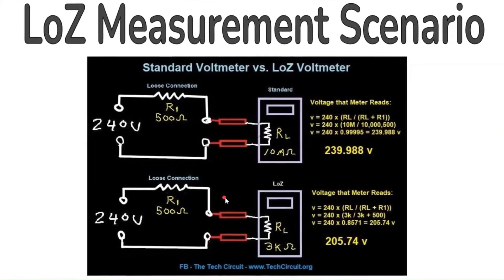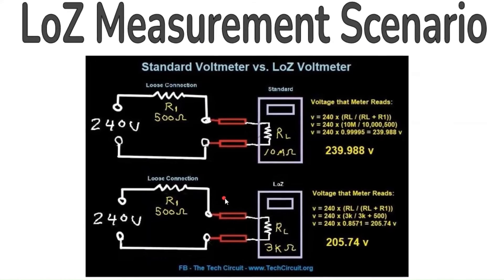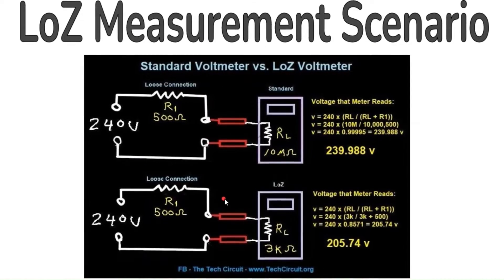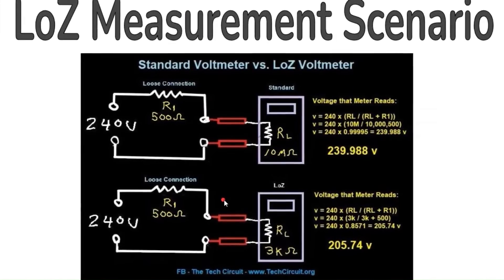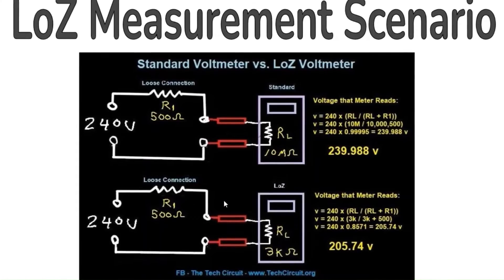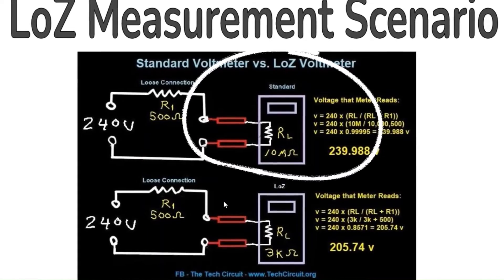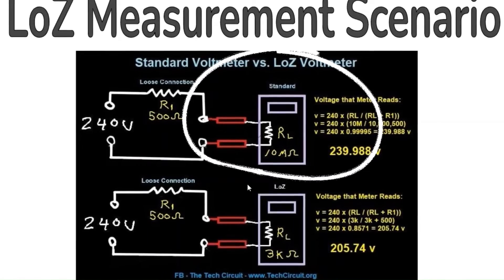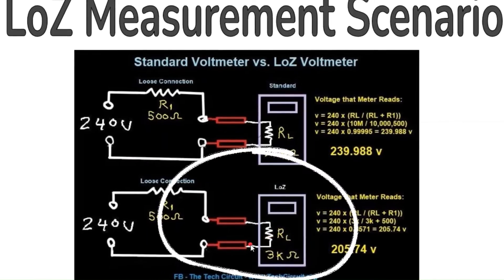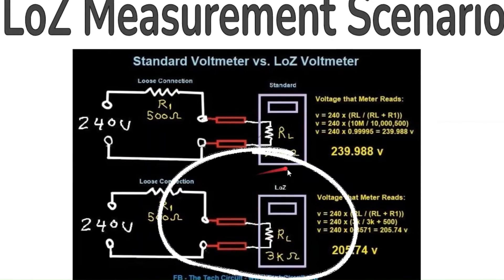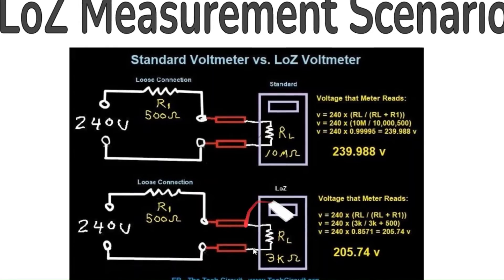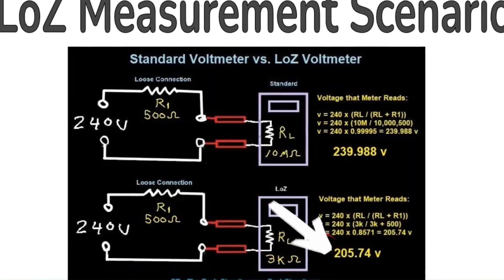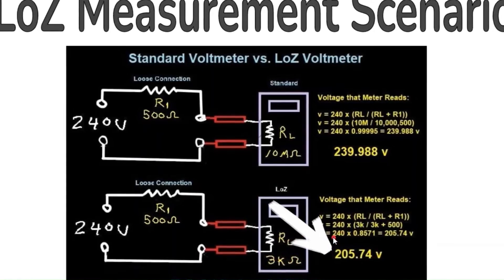So let's take a look at that voltage source being read by two different modes. This example shows the difference in the voltage that you would read using a traditional mode versus low Z. As you can see, the low Z mode is the only mode that reveals a problem with this voltage source.